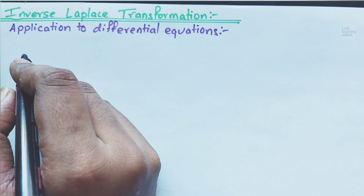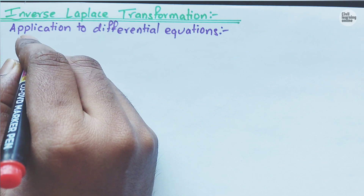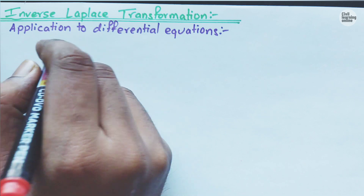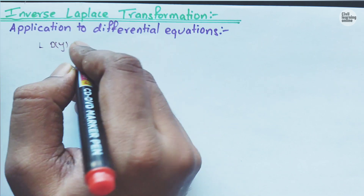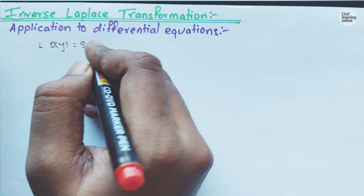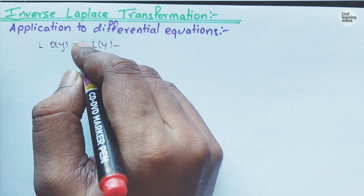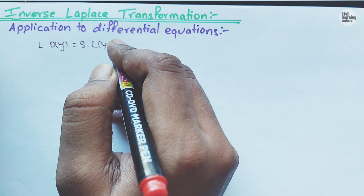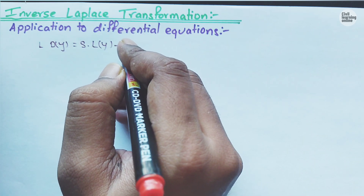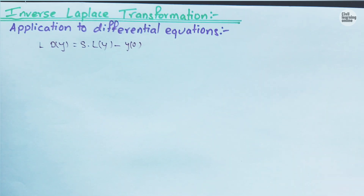Let's begin today's lecture. Suppose we are provided with a differential equation in terms of y and we want to apply Laplace transformation. The formula for the first derivative — where power d is 1 — will be s times Laplace transformation of y, minus s to the power 0 (which is 1) times y(0).